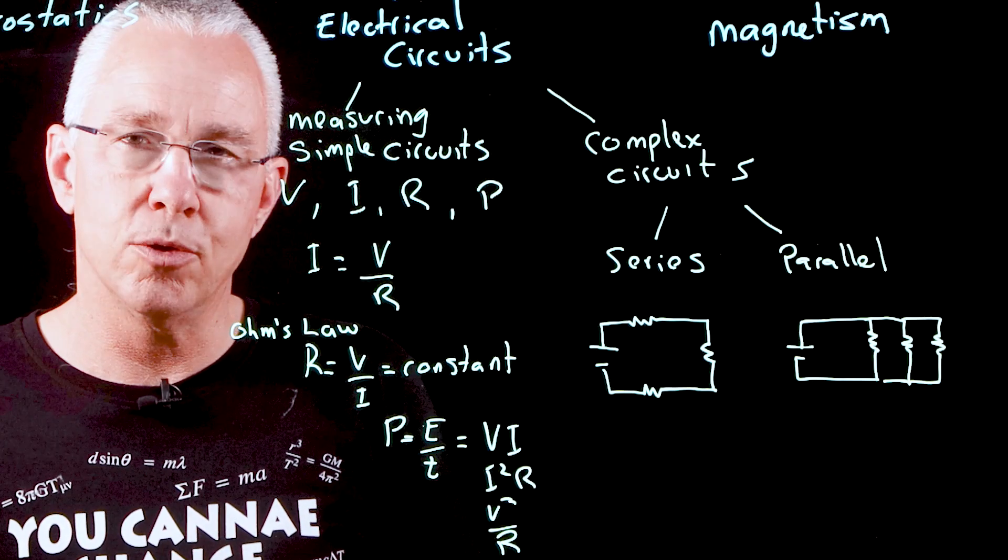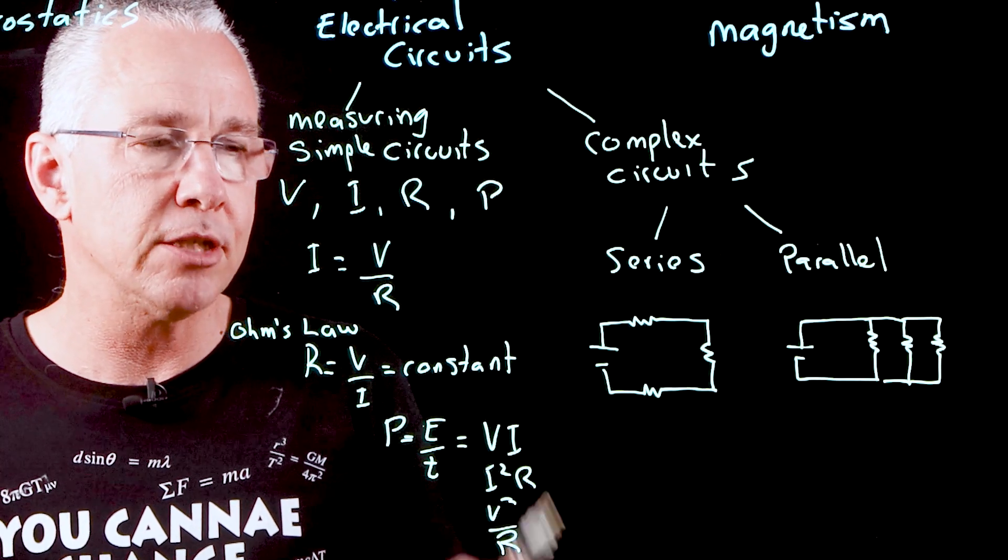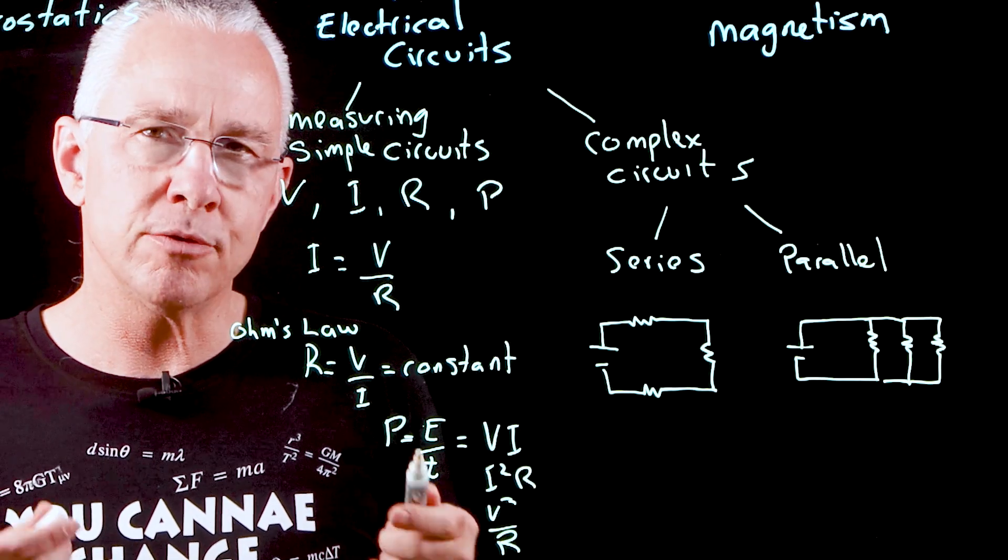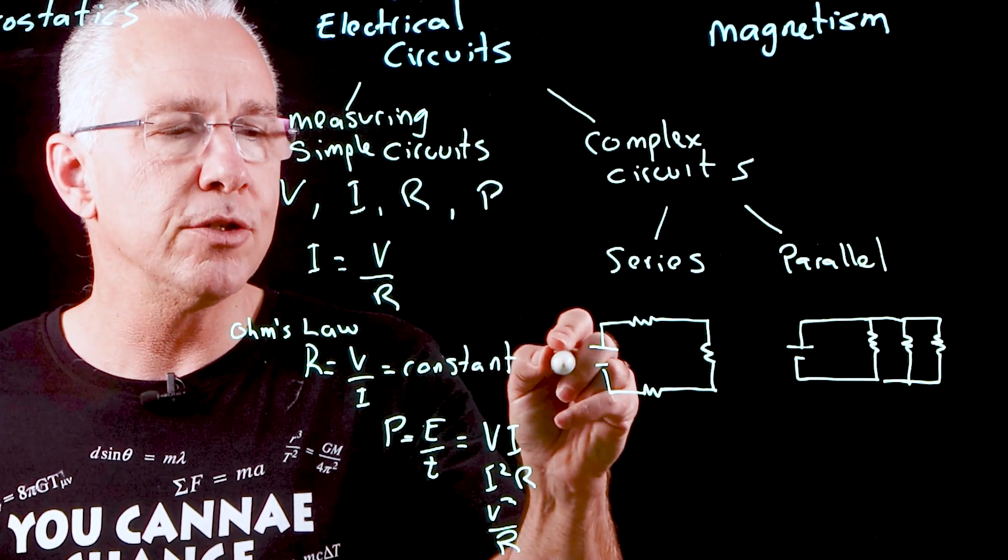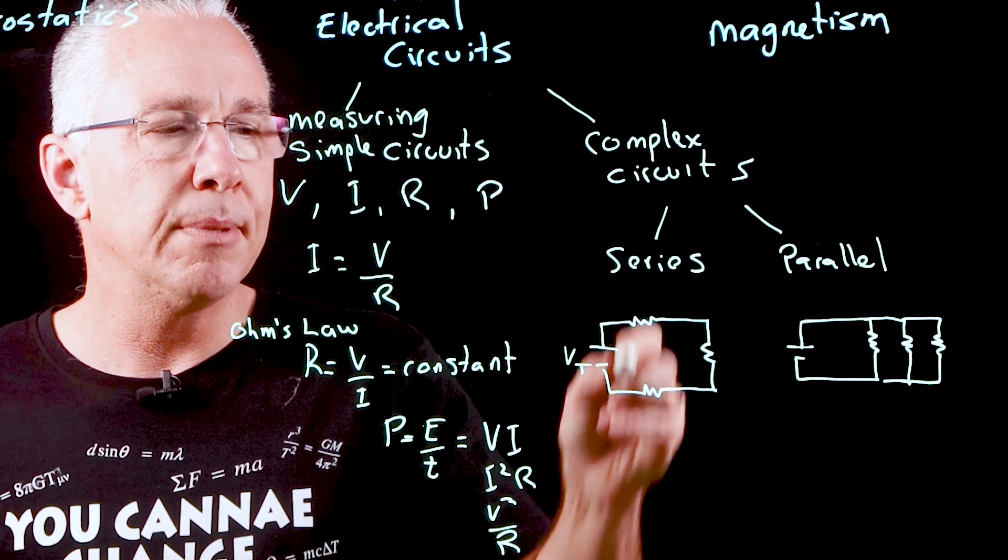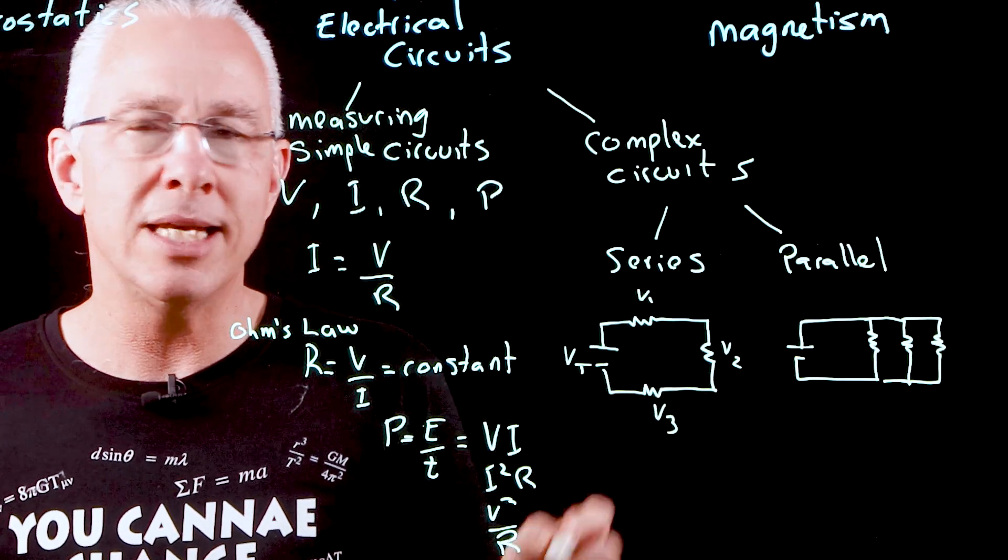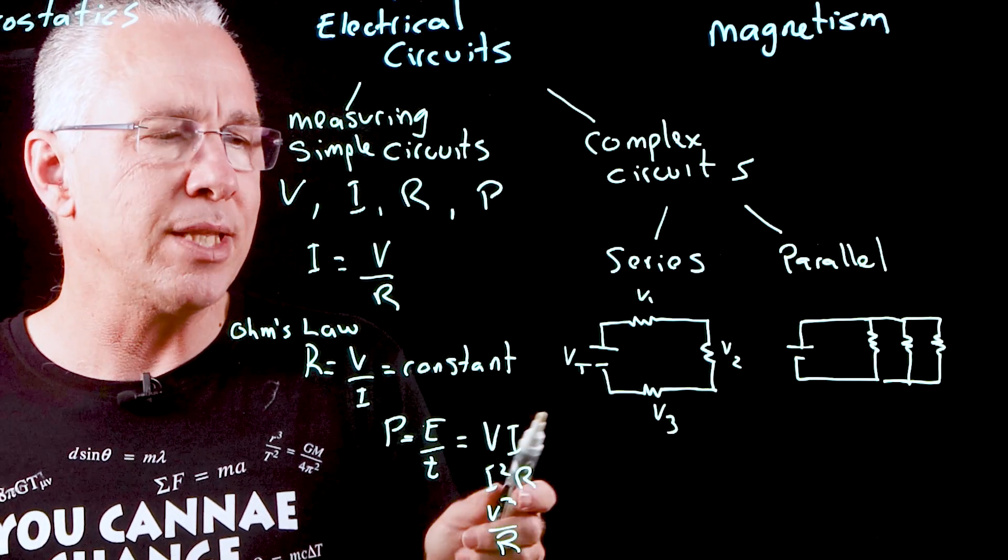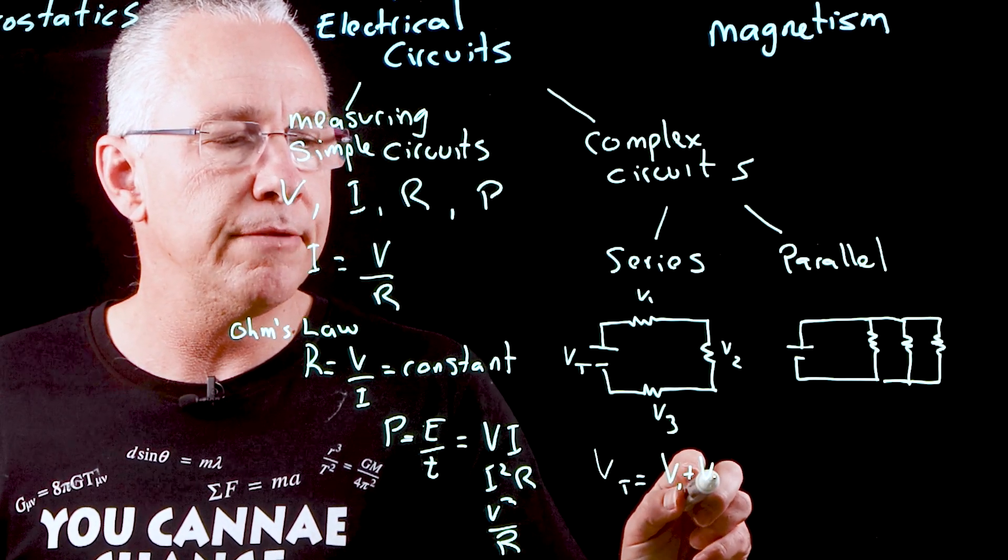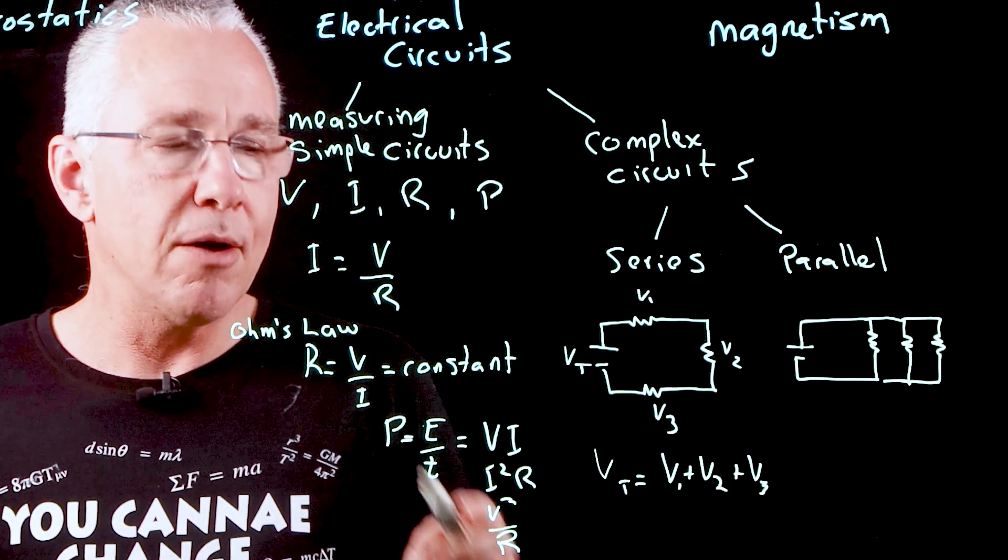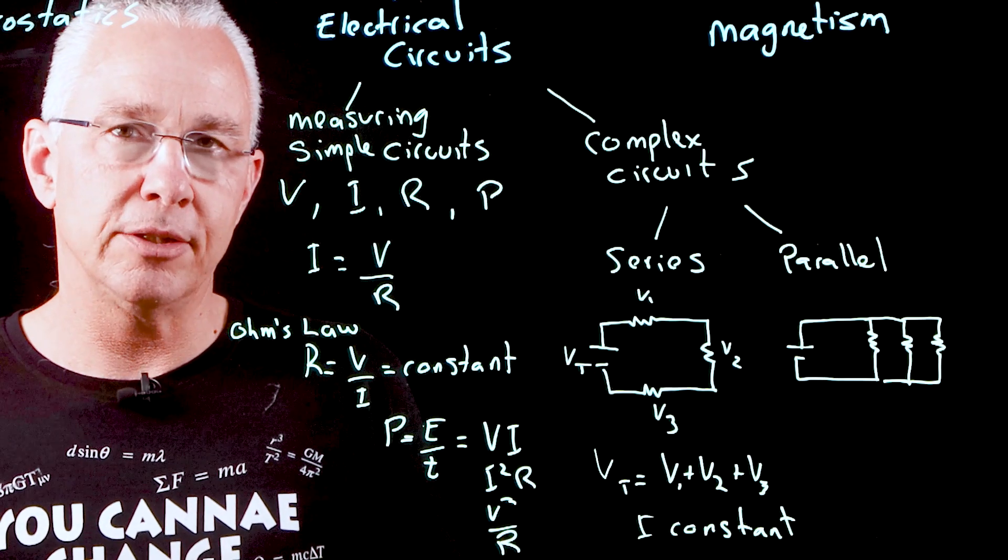In essence, what we want to look at is Kirchhoff's rules or laws. Kirchhoff's laws are a simplification of understanding the conservation of energy. Kirchhoff's law says that the total voltage in a circuit is zero. We have an applied voltage Vt, but then we have a loss of voltages in our three resistors. What that means is that Vt equals the sum of the individual voltages. However, the current remains constant within a series circuit.